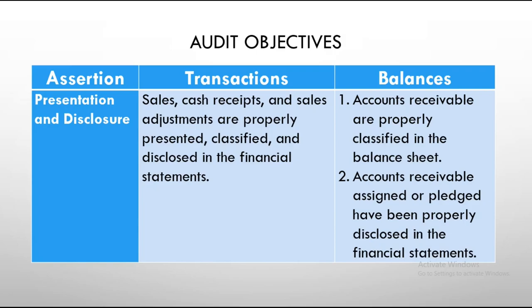Presentation and disclosure: sales, cash receipts, and sales adjustments are properly presented, classified, and disclosed in the financial statements. You check if it is correct to record a transaction as sales versus other income. In terms of balances, accounts receivable are properly classified in current assets, as part of trade and other receivables. Accounts receivable assigned or pledged must be properly disclosed in the notes to financial statements.